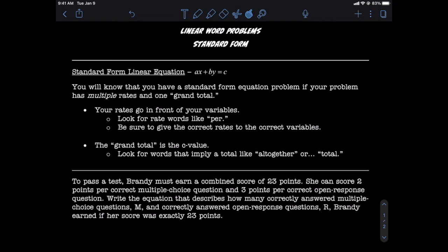Of course, a little background will help us out quite a bit before we get to our examples, so let's take a look at some important information. First, we're going to need to know how to tell the difference between a standard form equation problem and one that fits something like Y equals MX plus B. The main telltale sign is that a standard form problem is going to have multiple rates embedded within it and a grand total at the end, or anywhere in the problem.